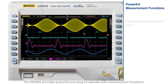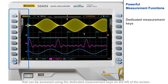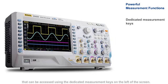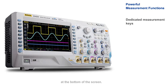The DS4000 provides powerful and easy-to-operate auto-measurement functions that can be accessed using the dedicated measurement keys on the left of the screen. This allows you to quickly enable any measurement item and read the measurement result at the bottom of the screen.